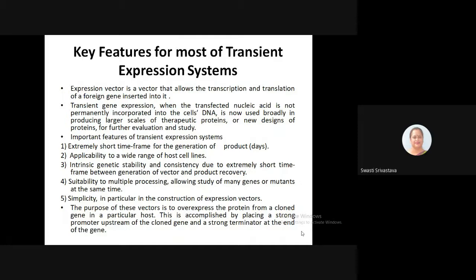Important features of the transient expression system include the ability to produce the product in an extremely short time frame. They should also be applicable to a wide range of host cell lines — it is not sufficient if a vector is applicable to only one particular cell line. One expression system should be able to be incorporated into a number of various host cell lines; for example, if it is available for CHO cells, it should also be able to insert the transgene into Vero cells, HeLa cells, insect cell lines, or murine cell lines.